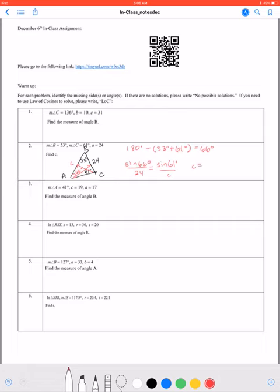When I solve, I'm going to get C equals 24 times the sine of 61 degrees over the sine of 66 degrees.